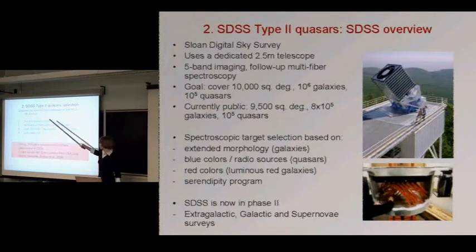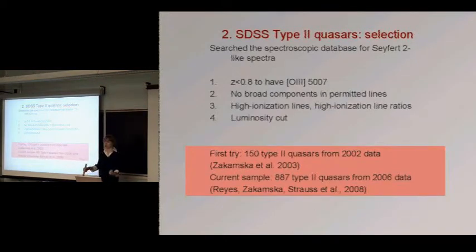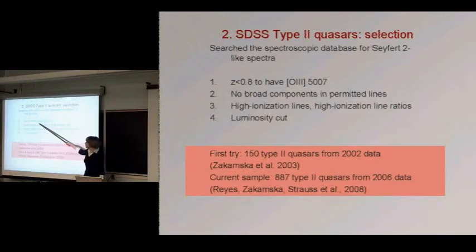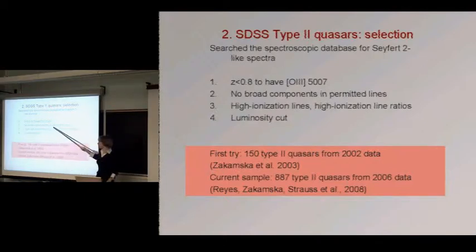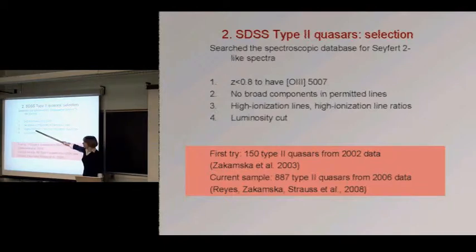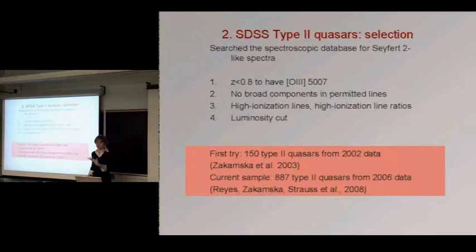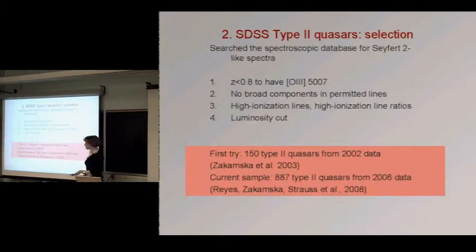We searched the spectroscopic database for everything that looks like a Seyfert 2 galaxy — a more luminous analog of a Seyfert 2. We restricted ourselves to redshift less than 0.8 because that's where the strong emission line moves out of the spectrum and objects become very faint. We required no broad components in permitted emission lines — if there is a broad component, the source is not obscured enough. We required high-ionization line ratios to distinguish narrow-line AGN from star-forming galaxies, and then applied a luminosity cut to distinguish low- from high-luminosity AGN. We first published a sample of 150 objects, and now we have about 900.